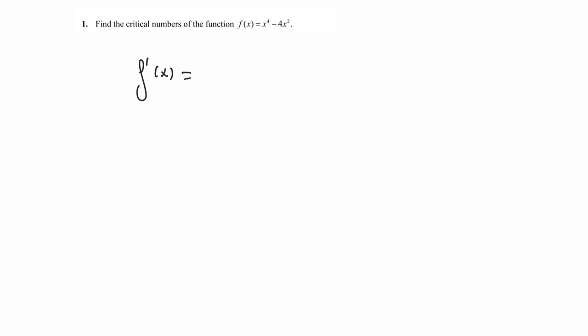The slope is f prime of x equals 4x cubed minus 8x. It exists for all x, so we need to find when the slope is zero — when f prime of x is zero — to find the critical points. The critical points appear when the slope is zero.